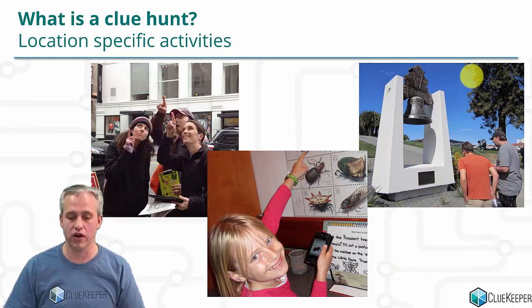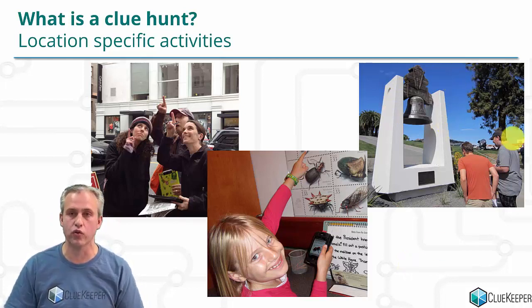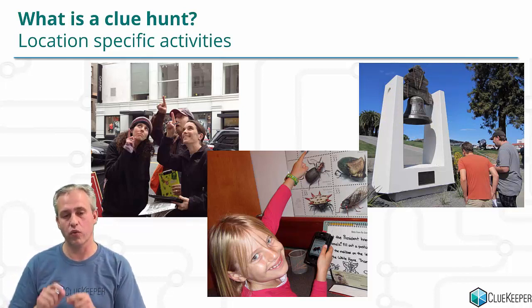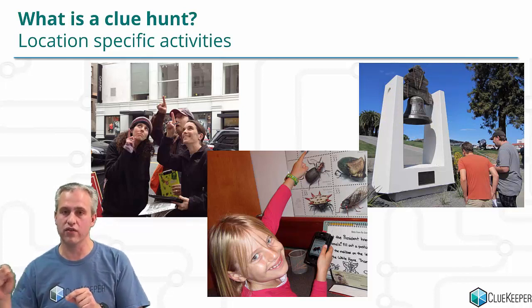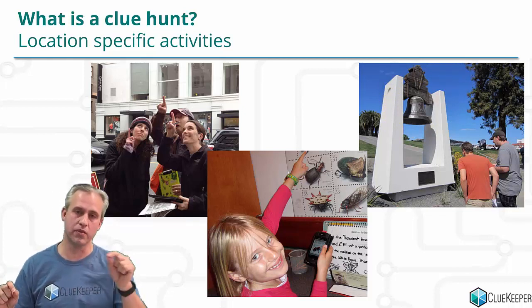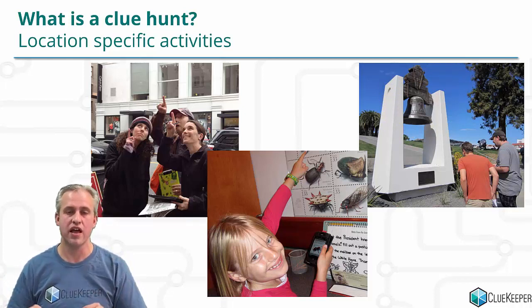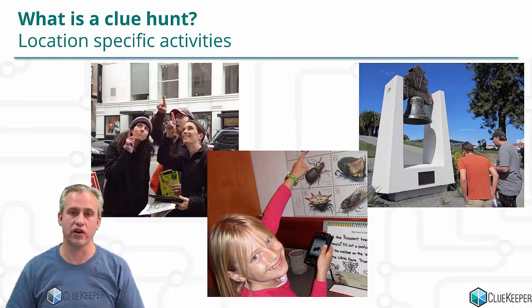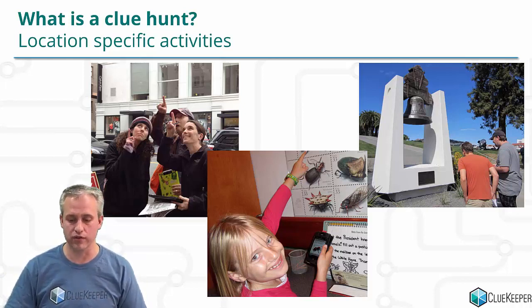Maybe in a different clue hunt, they just wanted you to see a really cool bell. The clue might be: what's the third letter from the fifth line, and the second letter from the first line? That has a solution, and it takes you to some other interesting location.